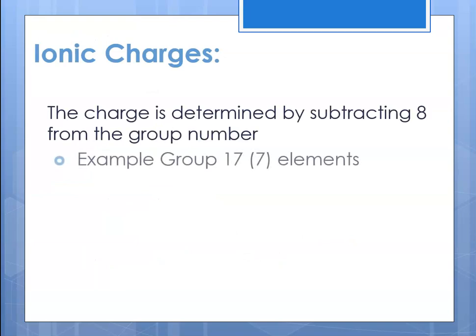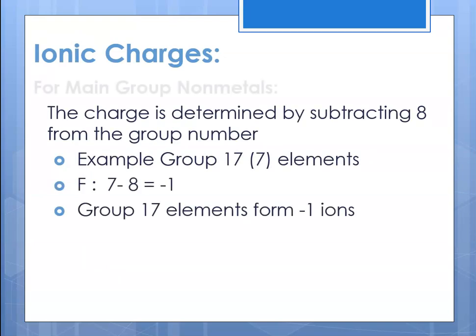For the main group nonmetals, the charge is determined by subtracting eight from the group number. Nonmetals go negative and form negative ions. So for example, group seventeen — the halogens, or seven A — its charge would be seventeen minus eight, which is negative one, so everyone in group seventeen forms a negative one ion.